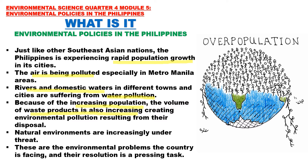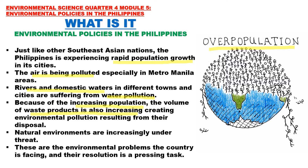Population pressure on cities leads to air, water, noise, and other environmental pollution, as well as a decrease in housing facilities and green vegetation. Problems resulting from population pressures on industrial development include industrial and environmental pollution and unemployment. Presidential Decree 1151, or the Philippine Environmental Policy, sets out national environmental policies, national environmental targets, the right to enjoy a healthy environment, guidelines for the Environmental Impact Statement (EIS), and guidelines for implementation bodies. It was enacted on June 6, 1977.